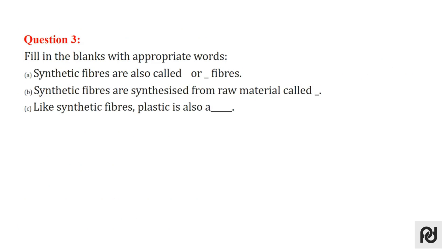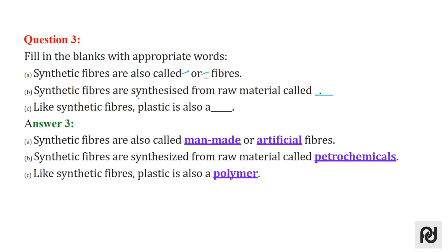Question 3 is fill in the blanks with appropriate words. First one: synthetic fibres are also called as manmade or artificial fibres. Synthetic fibres are synthesized from raw materials called petrochemicals. And like synthetic fibres, plastic is also a polymer.